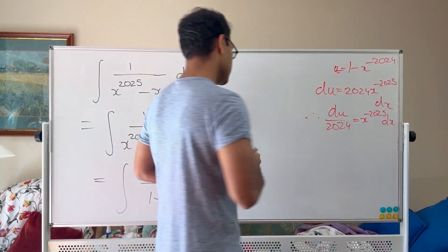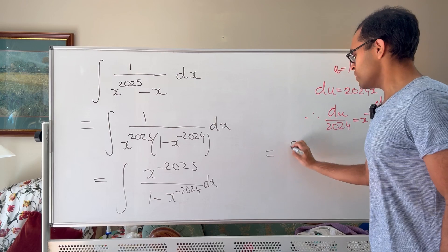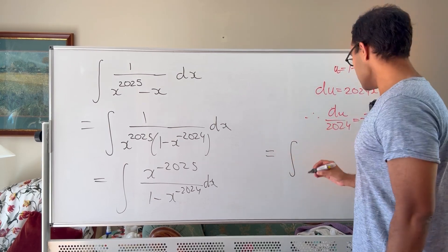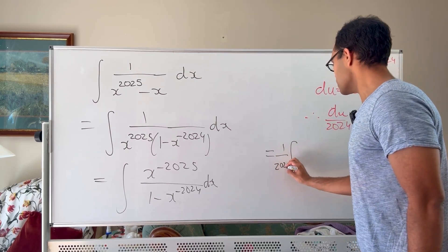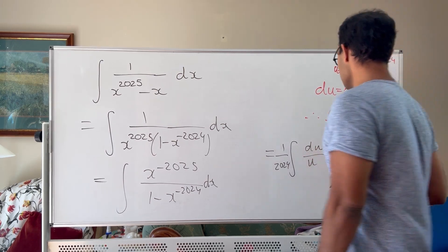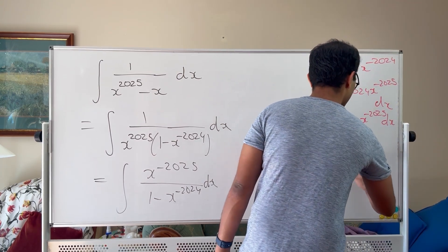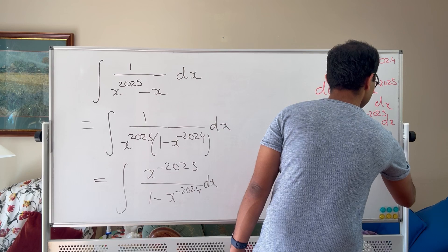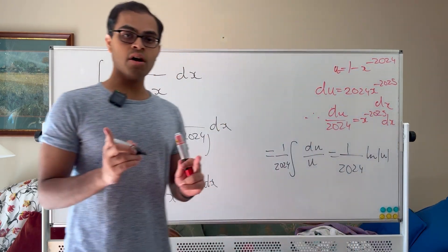So now this integral is just going to end up equaling to, once you make the u substitution, it's going to be 1 over 2024 is going to come out front times du over u, which is just going to be equal to 1 over 2024 times the log of absolute value of u plus a constant.